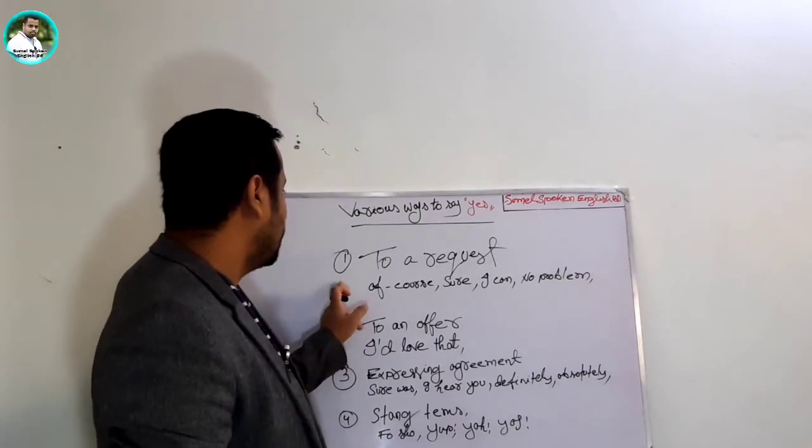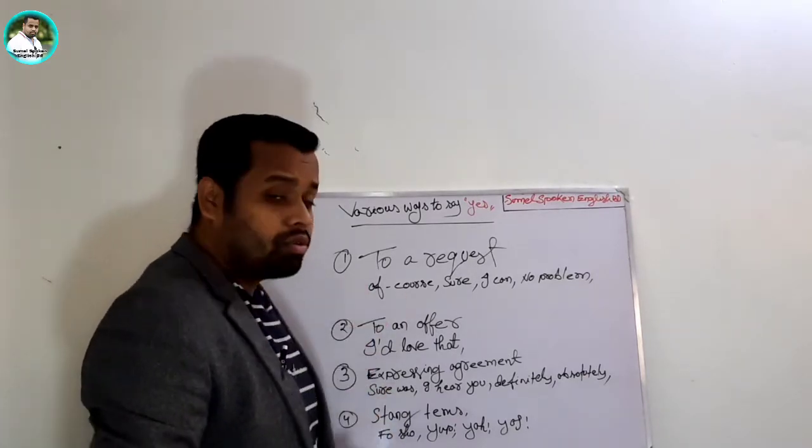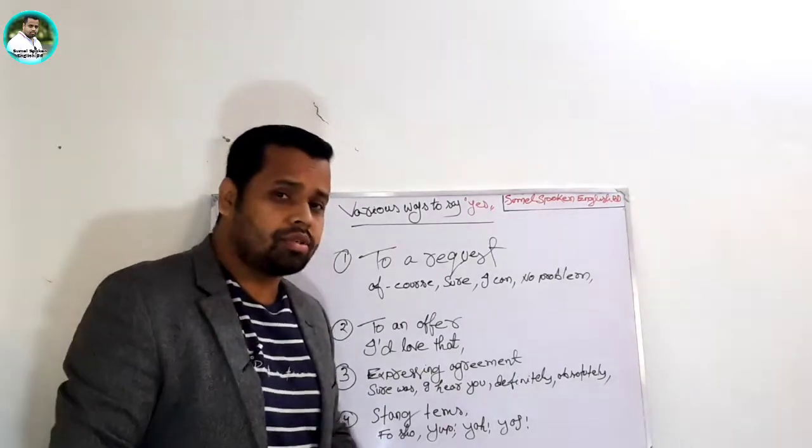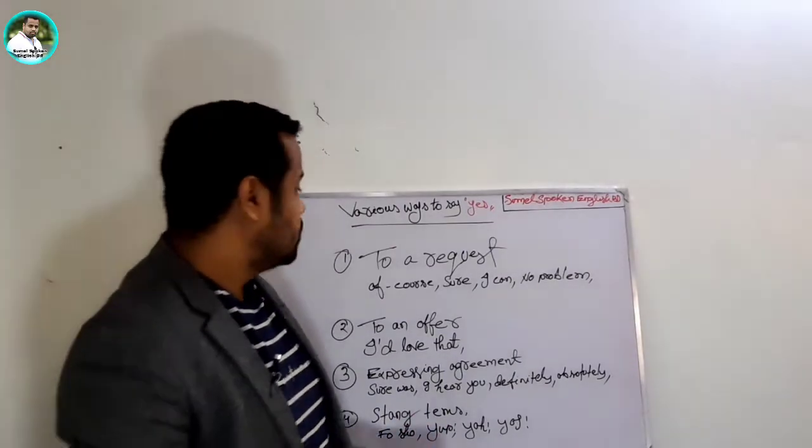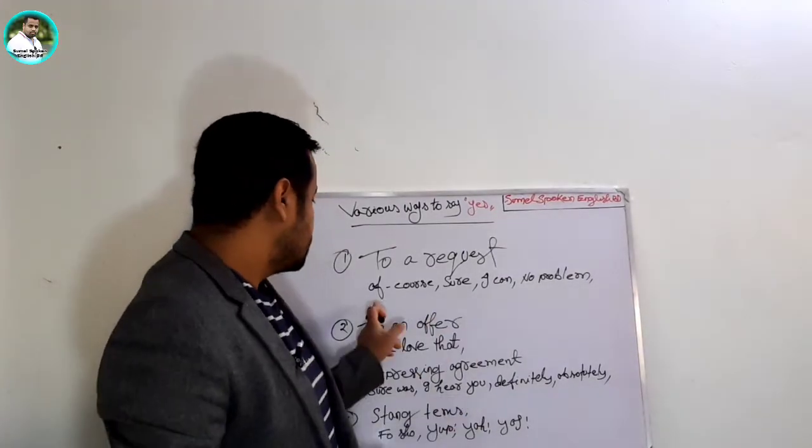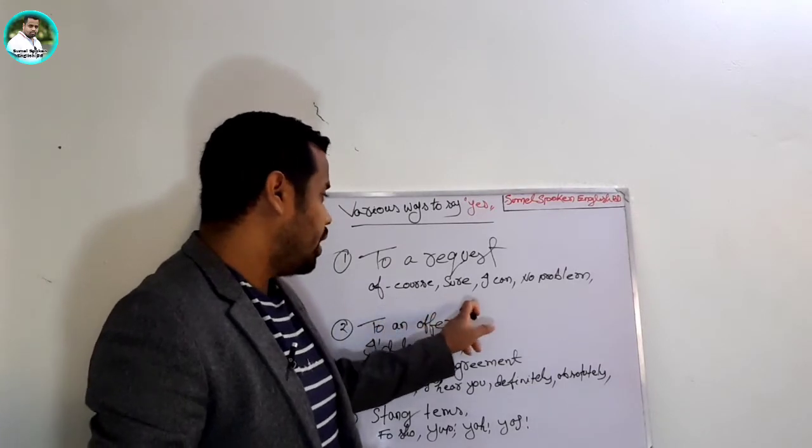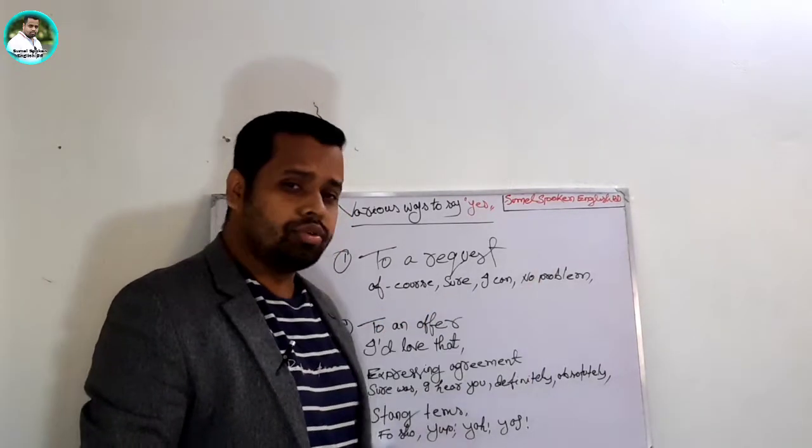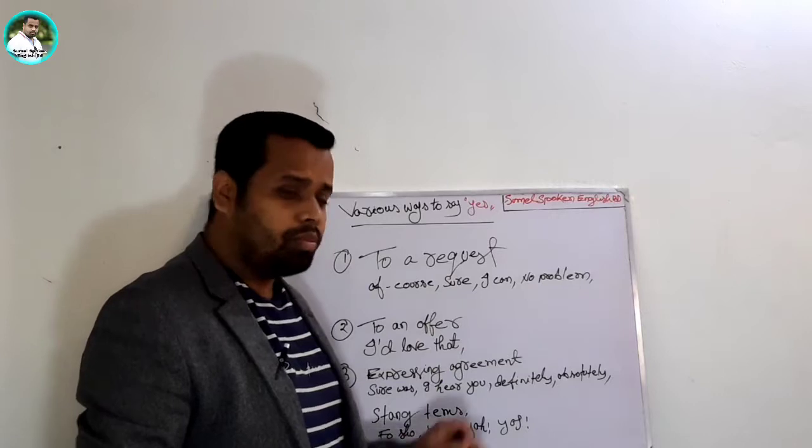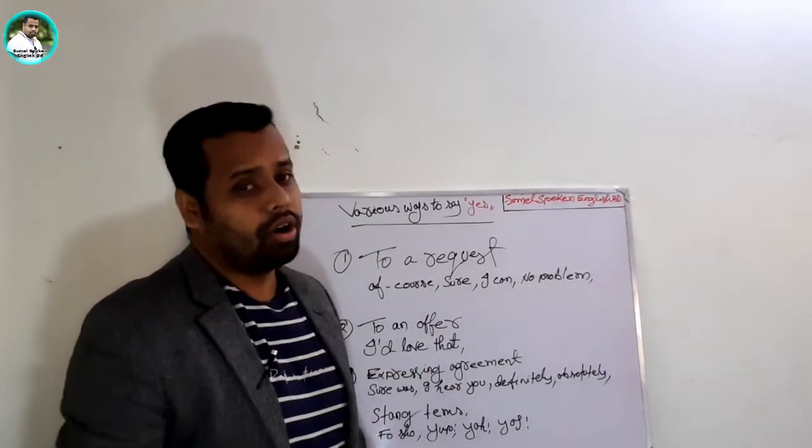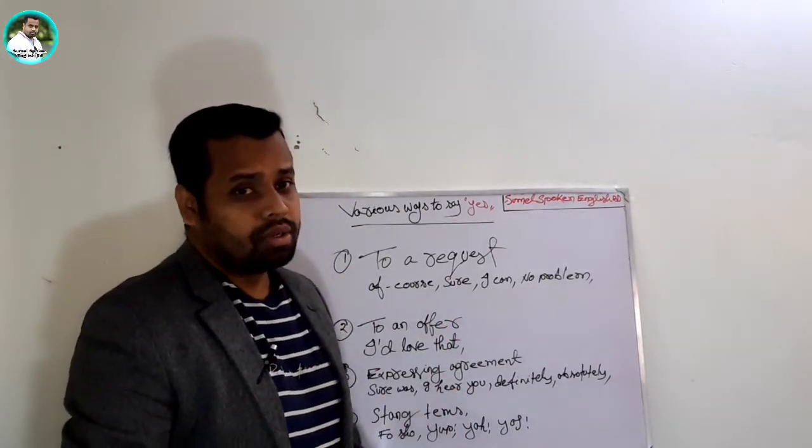First, number one: there is a return to a request. In order to request, we can use these words: of course, sure I can, no problem, no issues. Any one of these words we can use instead of yes.